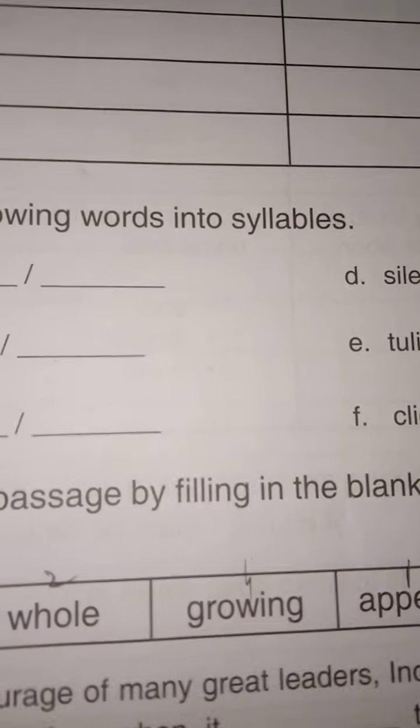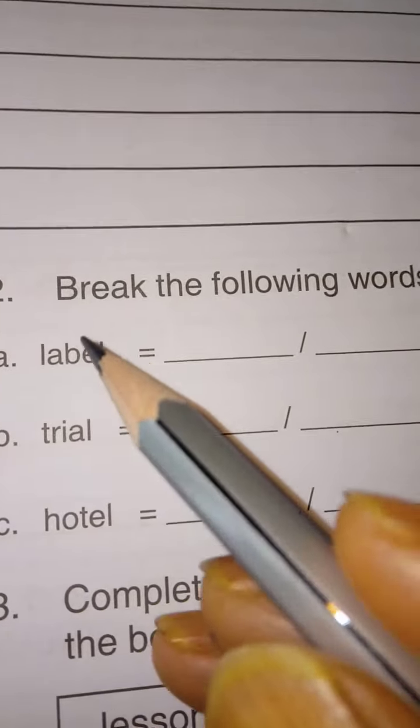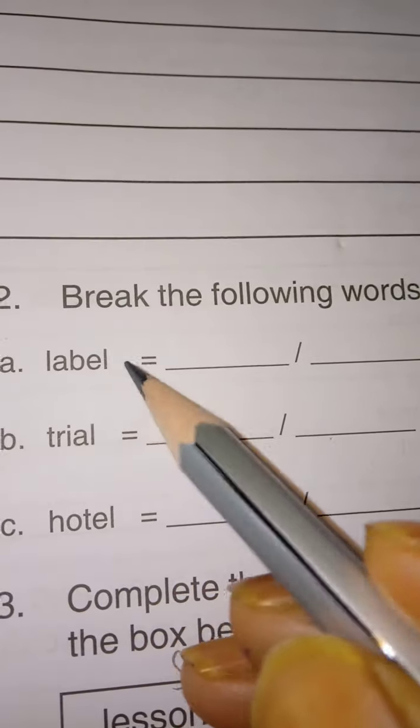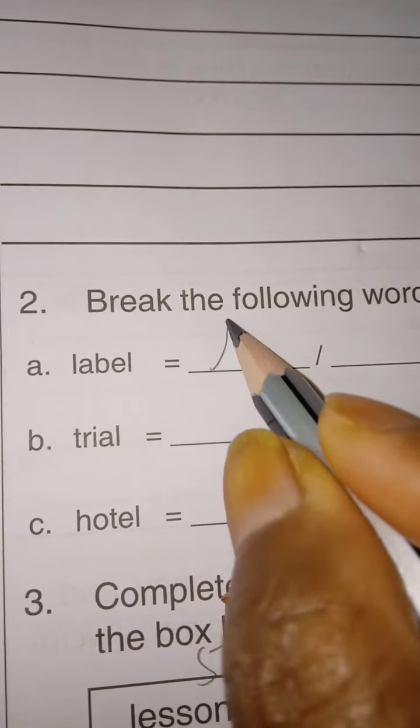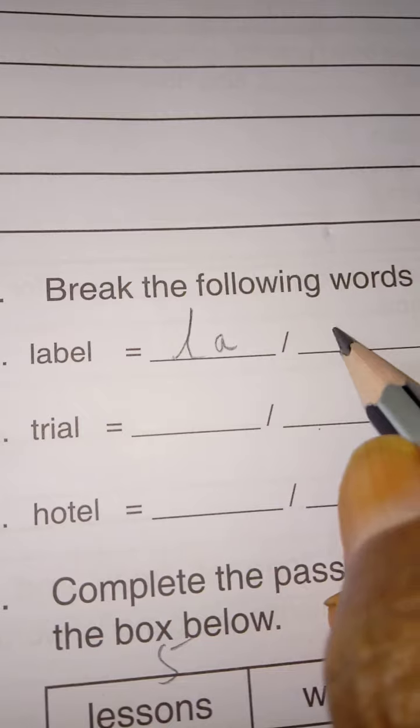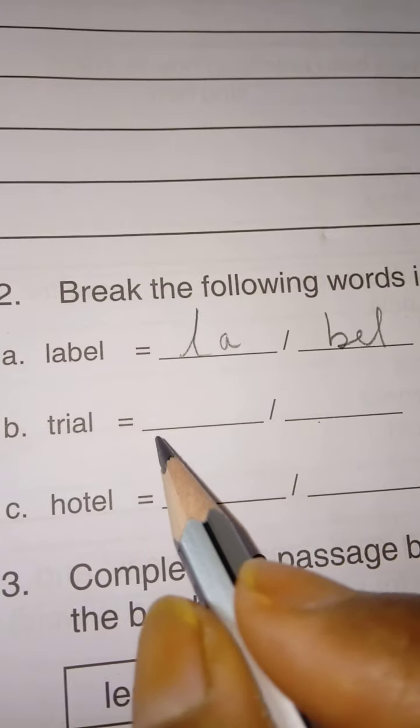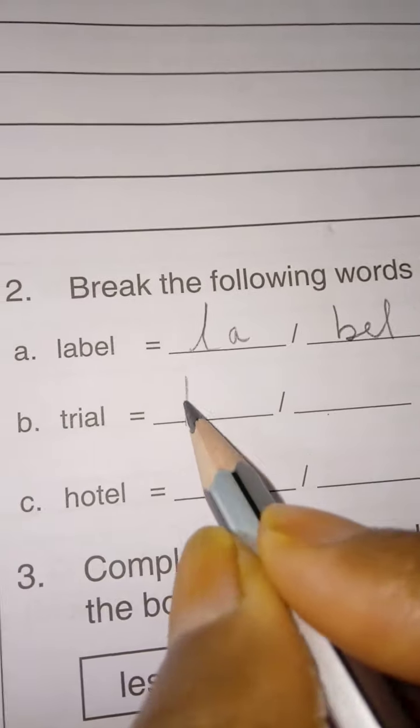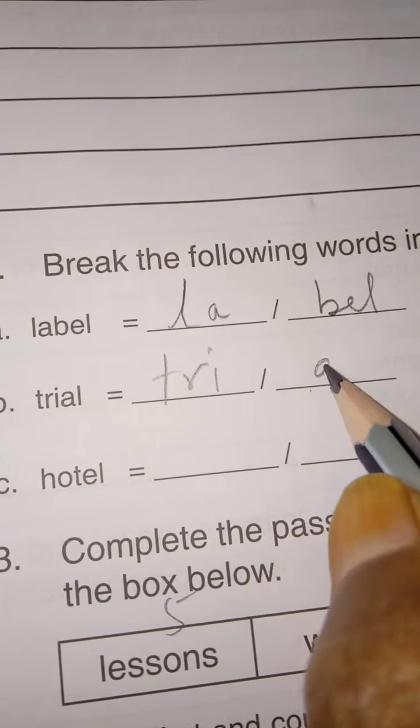Break the following words into syllables. Now, LABEL. How to do? LAY. It is one pronunciation. LAY then BEL. So you write LABEL like this. TRIAL. TRIAL. Like this.